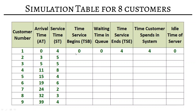For customer 2, service begins at four. The customer waited one minute, so waiting time is one. Service ends at four plus five equals nine. The customer spent five minutes of service plus one minute waiting, totaling six minutes. Idle time is zero — the system was continuously working. For customer 3, arrival time is five but the system is busy until nine, so service begins at nine. Waiting time is nine minus five equals four minutes. Service ends at nine plus five equals fourteen. Customer spent five minutes of service plus four minutes waiting, totaling nine minutes. Idle time is zero.